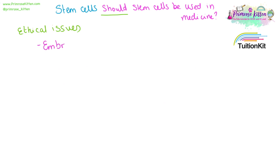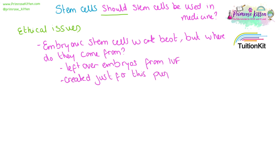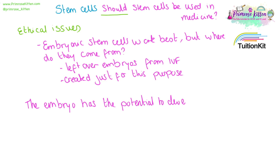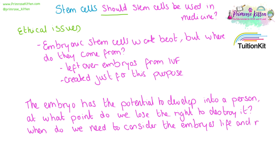It is very complicated when we are talking about ethical issues. Embryonic stem cells work best, but where do they come from? These can be left-over embryos after IVF — ones that could just be thrown away otherwise — or they could be embryos that are created specifically for this purpose. These embryos have the potential to develop into a human being, the potential to develop life. At what point do we lose the right to create embryos, to destroy an embryo — when and if do we need to consider the embryo's life and the embryo's rights? I am not going to tell you what the correct answer is here because it is personal opinion, and you have to be very clear about this when you are writing in the exam.